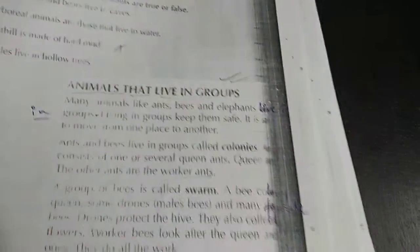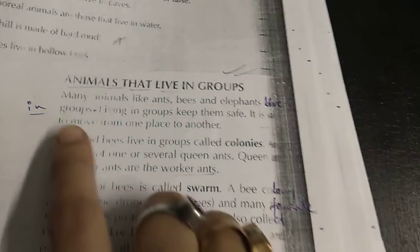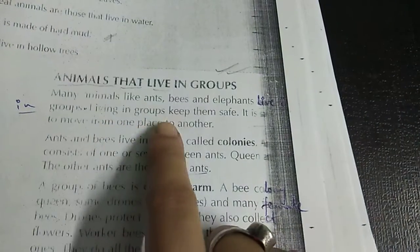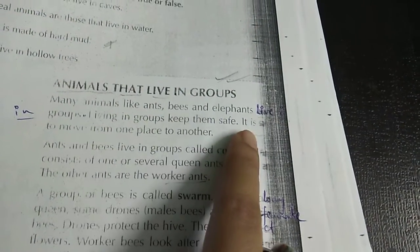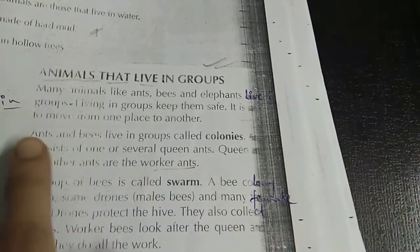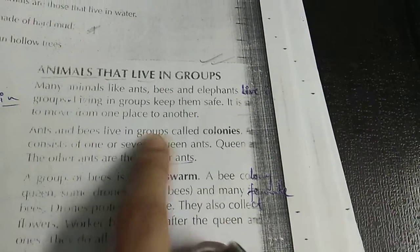Animals that live in group. Some animals that live in group altogether. Many animals like ants, bees, elephants live in group. Living in group keep them safe, it is easy for them to move from one place to another.